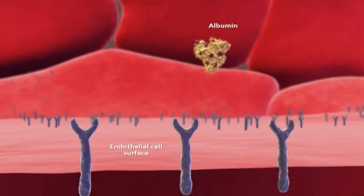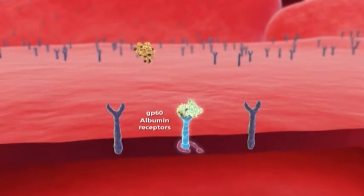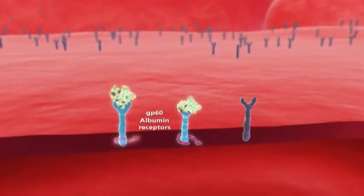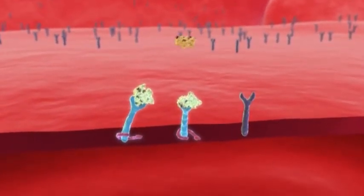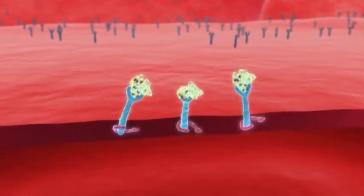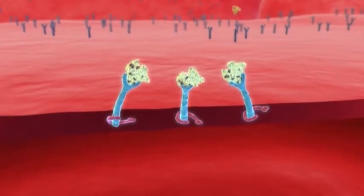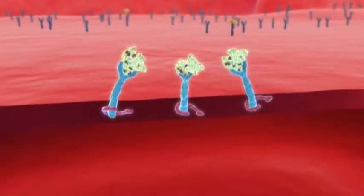Albumin first binds specifically to vascular endothelial cells via GP60 receptors, also known as albondin, on the surface of endothelial cells. The primary function of GP60 receptors is to participate in the transport of albumin across the blood vessel wall.